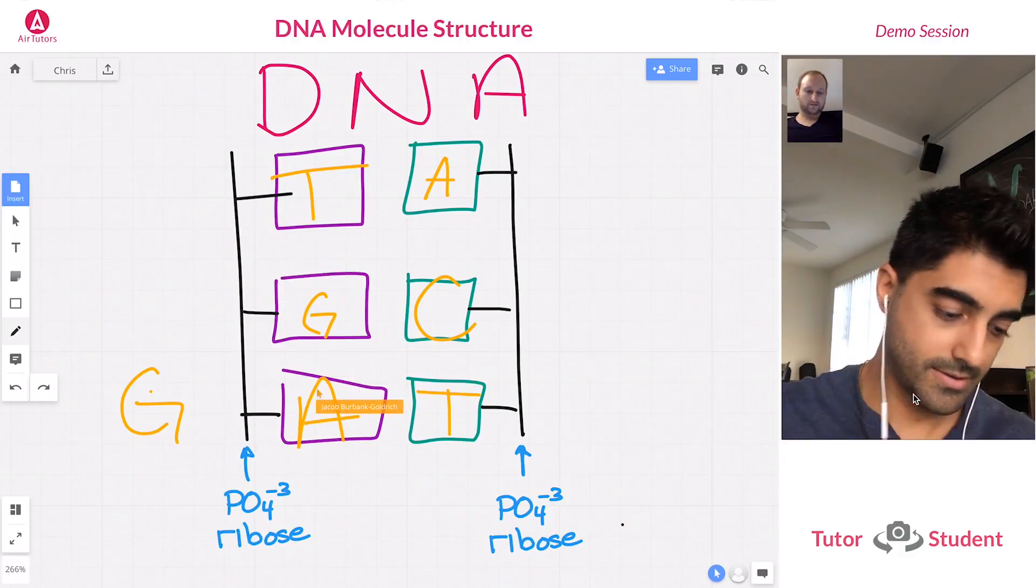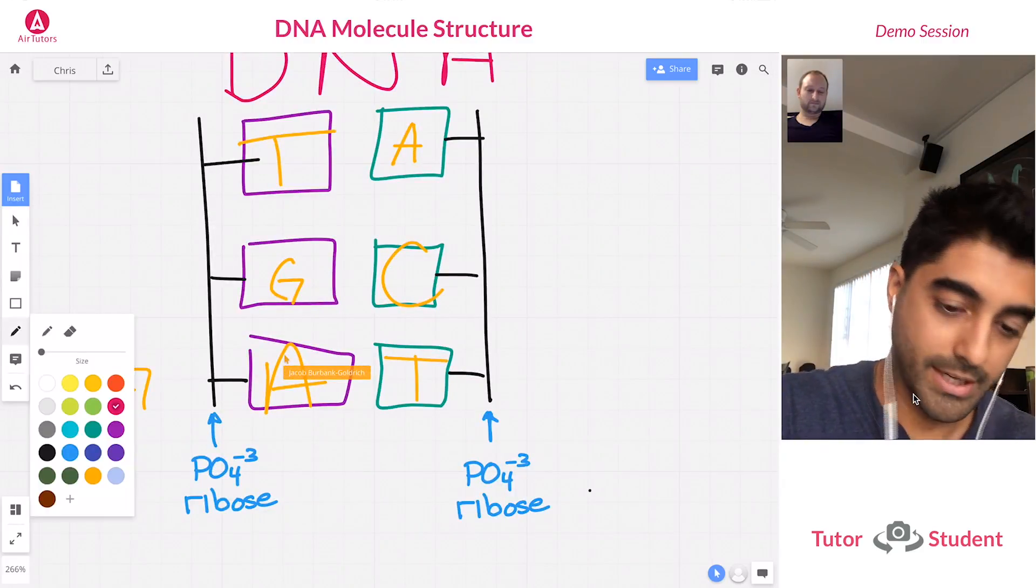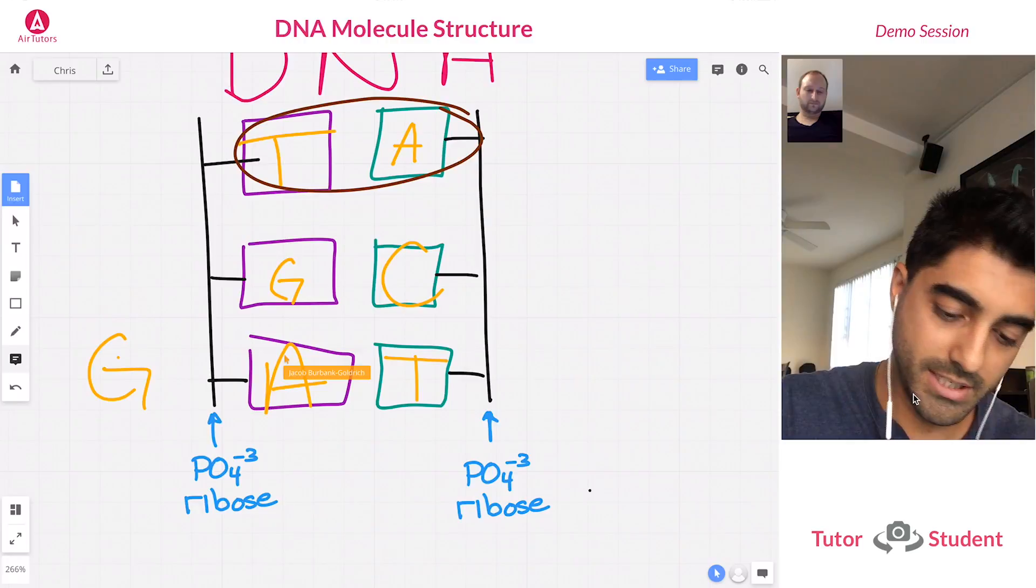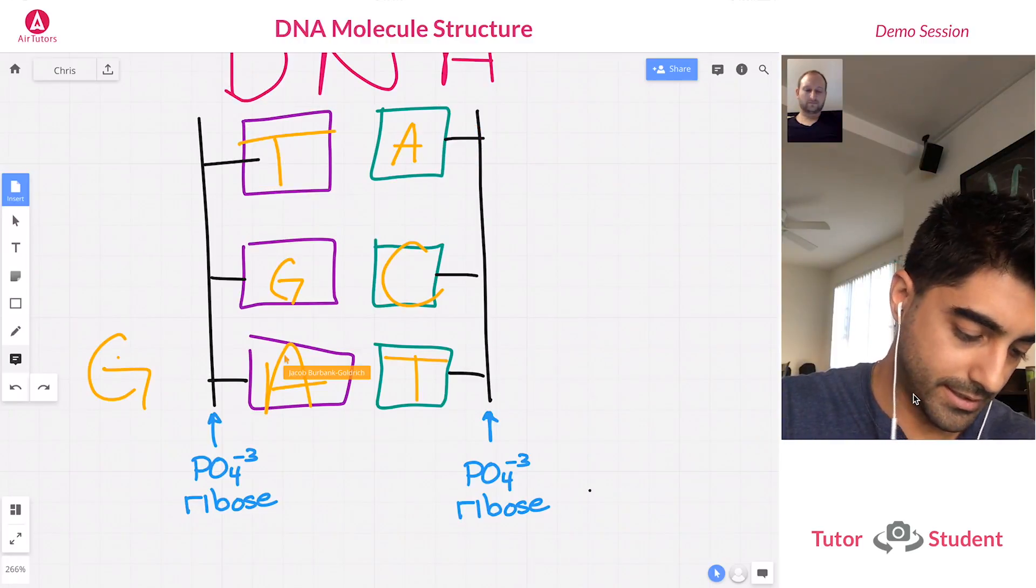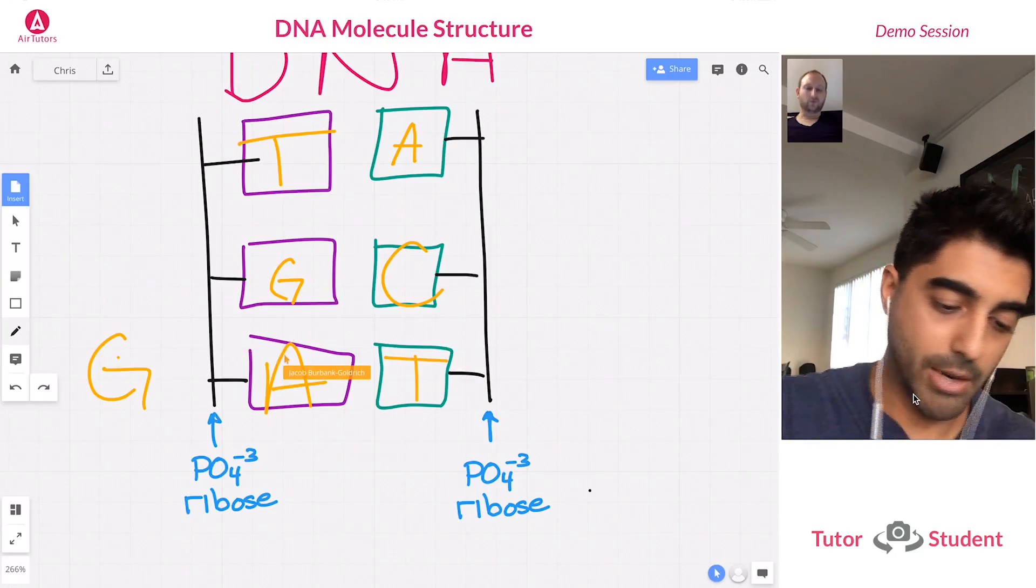Good job, nice. Cool, so this is exactly how it base pairs. You have A and T base pairing, you have G and C base pairing, and then you also have A and T base pairing again. So however, reverse works always. Yeah.